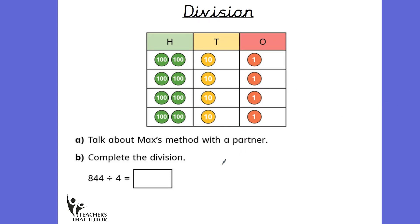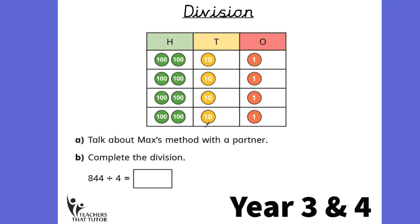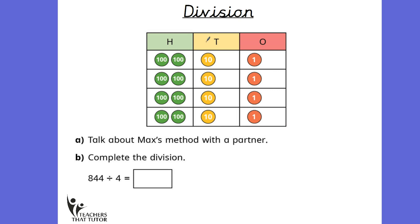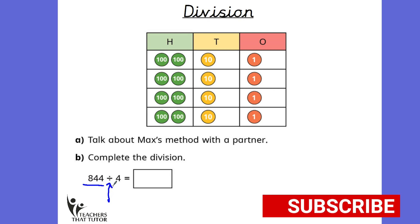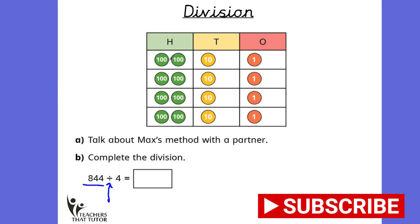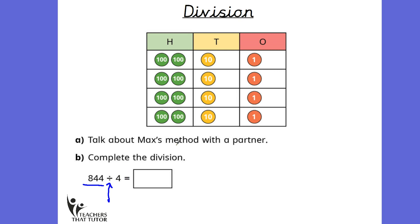In Year 3 and 4, the children should be starting to learn about dividing three and four digit numbers. Here you can see how they might learn this in the first instance. There's a place value chart, and we've got a number made four times. The number is 844, and division in its most basic form means to share. So here you can see that 844 has been shared out equally into four groups.